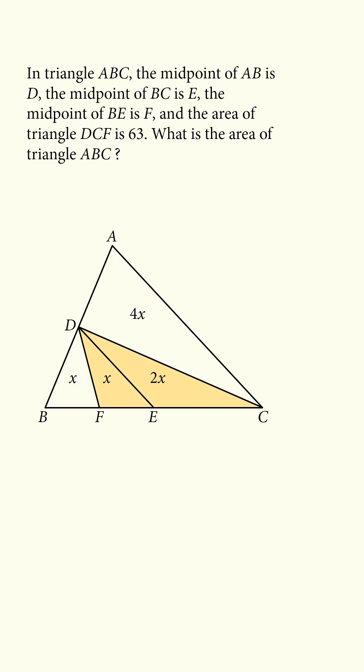We know that triangle DFC has area equal to 63, so 3x equals 63, x is equal to 21. The entire triangle ABC has area equal to 8x, and that means the area of triangle ABC equals 168.